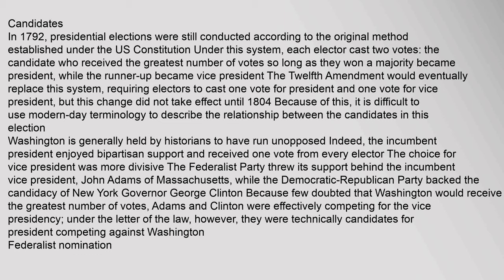Because of this, it is difficult to use modern-day terminology to describe the relationship between the candidates in this election. Washington is generally held by historians to have run unopposed. Indeed, the incumbent president enjoyed bipartisan support and received one vote from every elector. The choice for vice president was more divisive. The Federalist Party threw its support behind the incumbent vice president, John Adams of Massachusetts, while the Democratic-Republican Party backed the candidacy of New York Governor George Clinton. Because few doubted that Washington would receive the greatest number of votes, Adams and Clinton were effectively competing for the vice presidency, though under the letter of the law they were technically candidates for president competing against Washington.